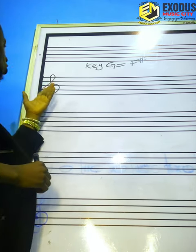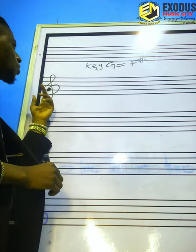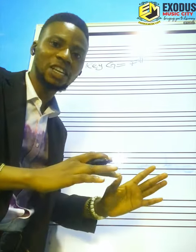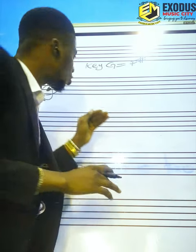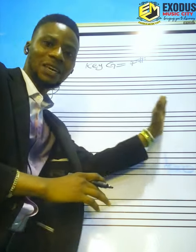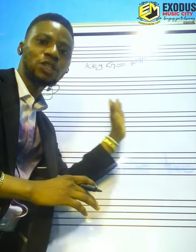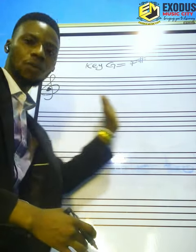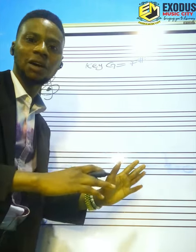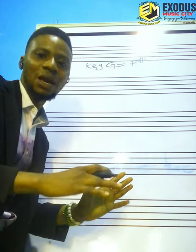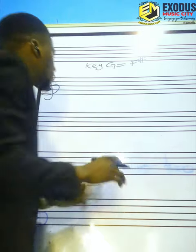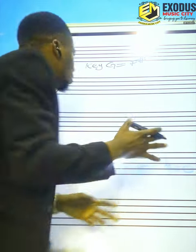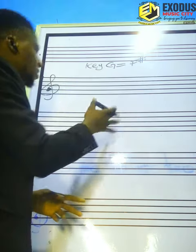You have your clef on the staff. For the construction of scale without key signature, you fix the notes — that is the alphabetical arrangement of the notes — before the accidental. The accidental should then be placed beside the note.